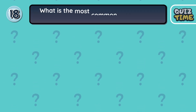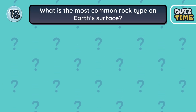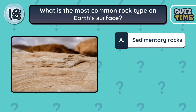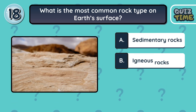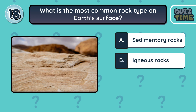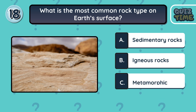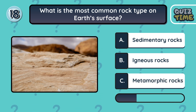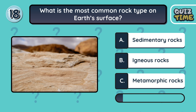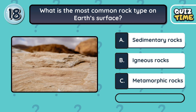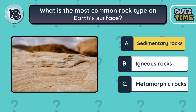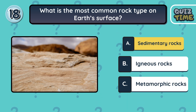Number 18. What is the most common rock type on Earth's surface? A. Sedimentary rock. B. Igneous rocks. C. Metamorphic rocks. The correct answer is A. Sedimentary rock.